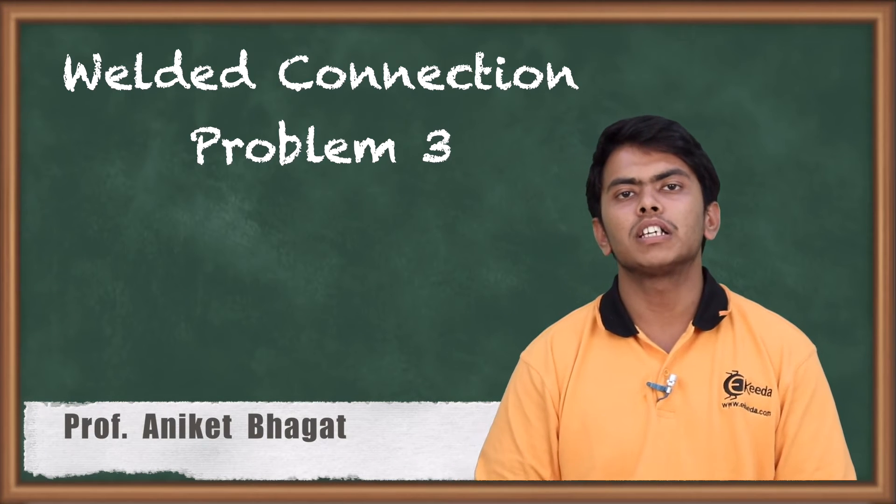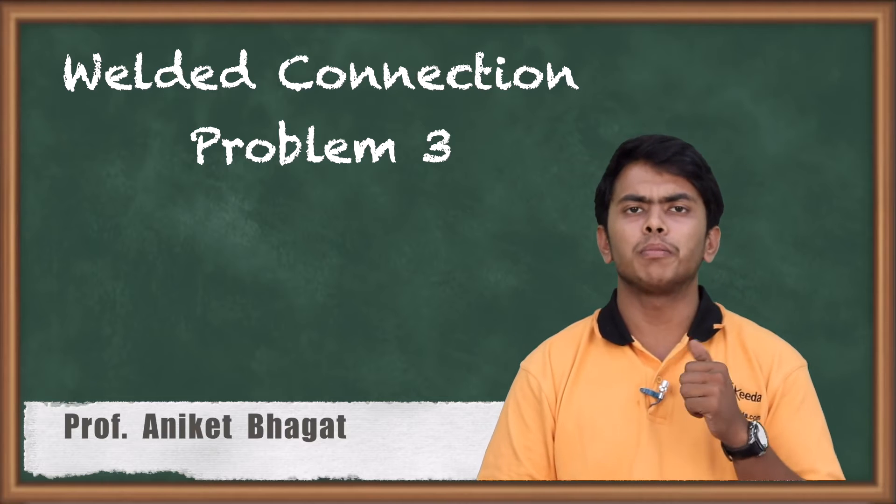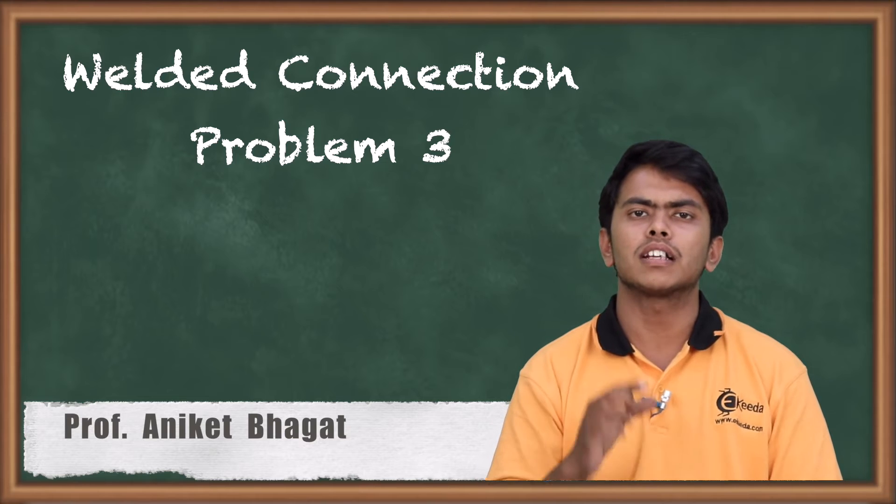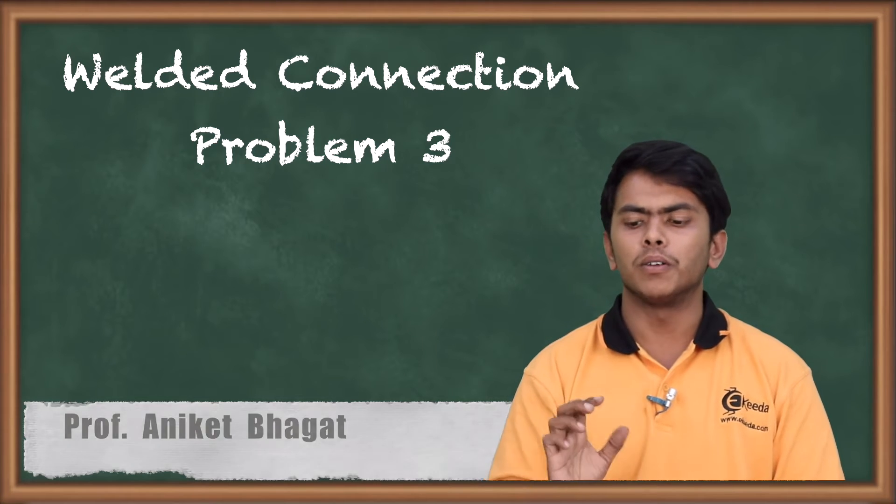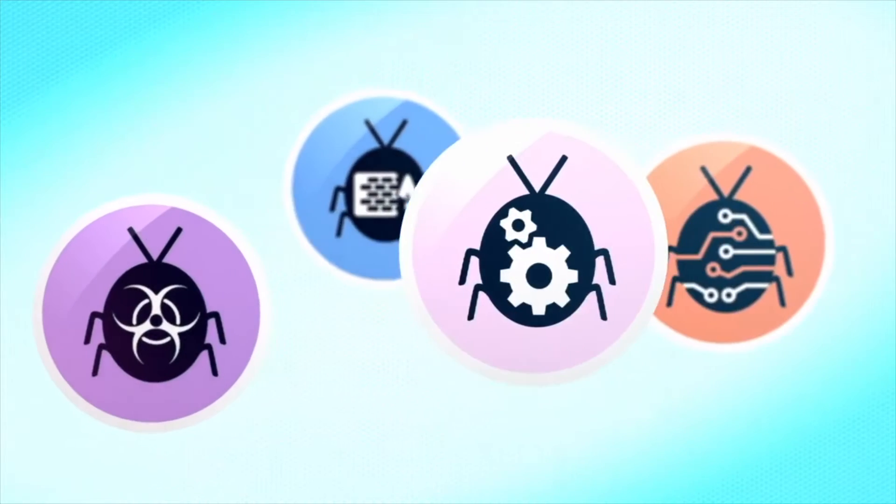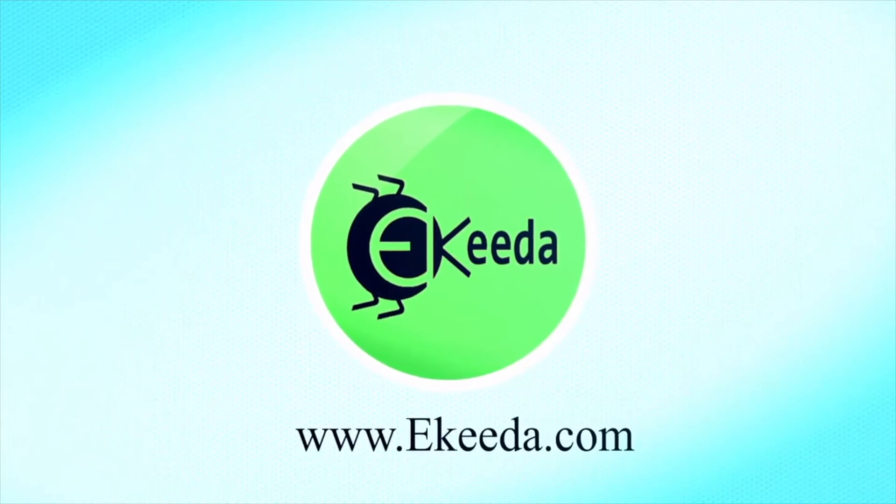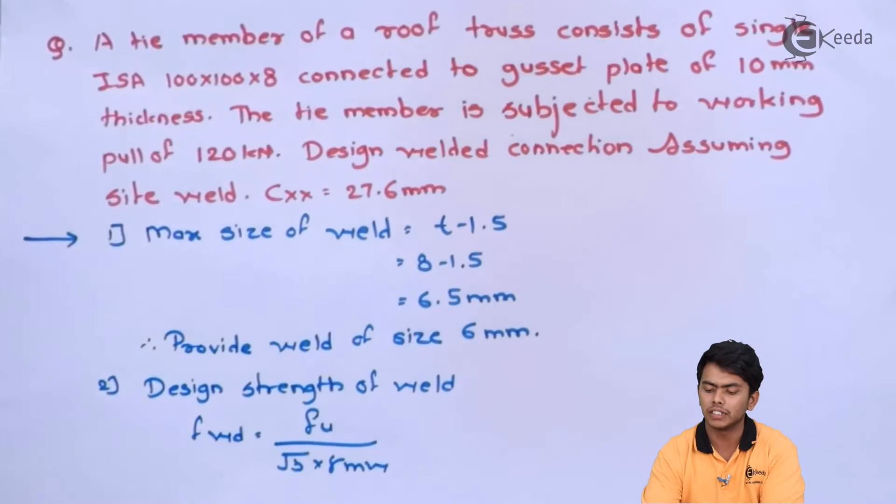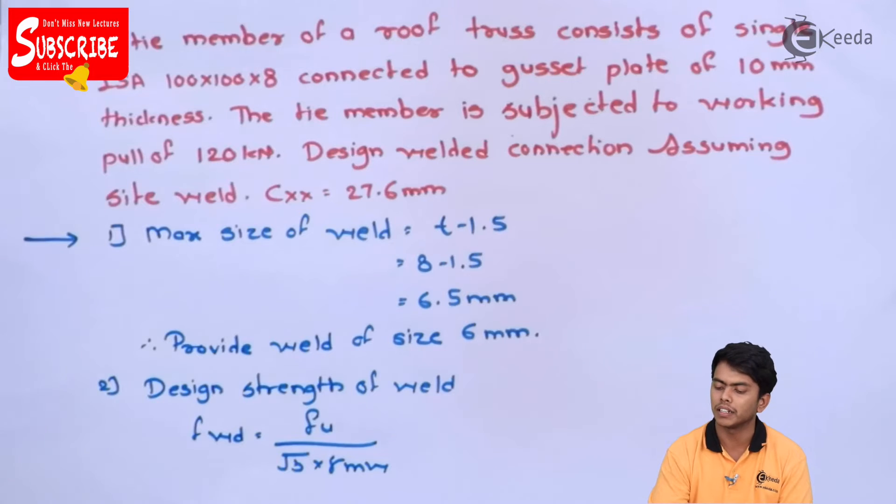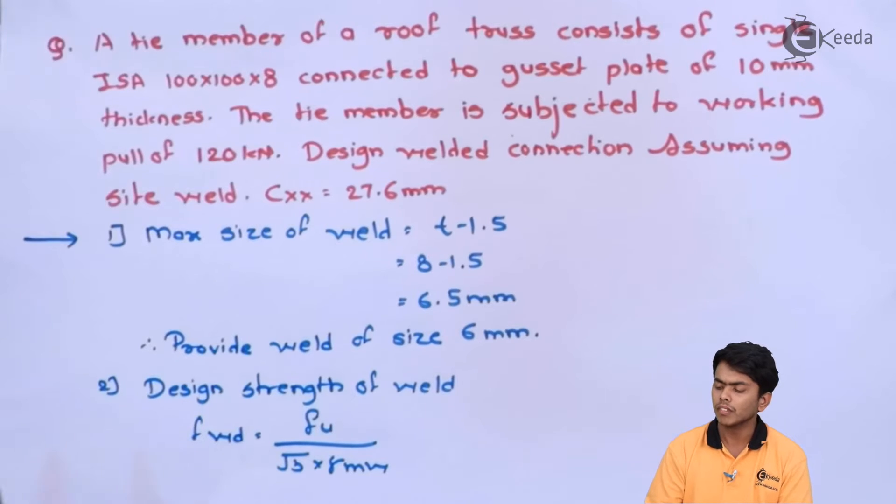Today we are going to see a simple problem of welded connection when a roof truss is connected to the angle of welded connection. The roof truss consists of a single ISA 100 x 100 x 8 connected to a gusset plate of 10 mm thickness. The member is subjected to a working pull of 120 kN. Design welded connection assuming site weld.